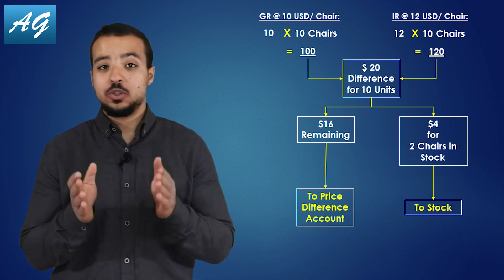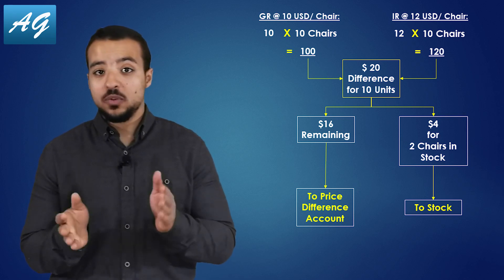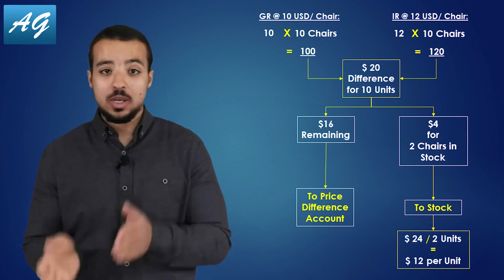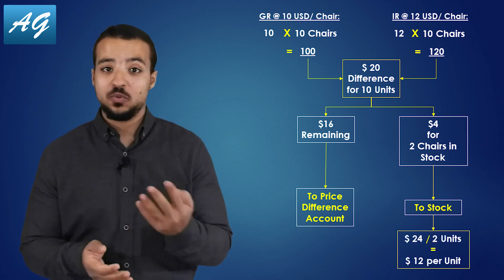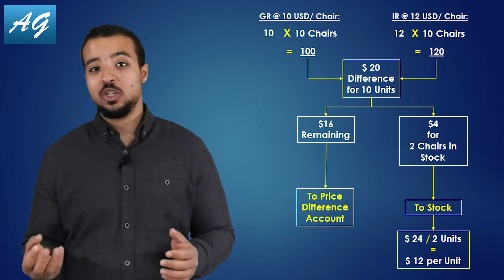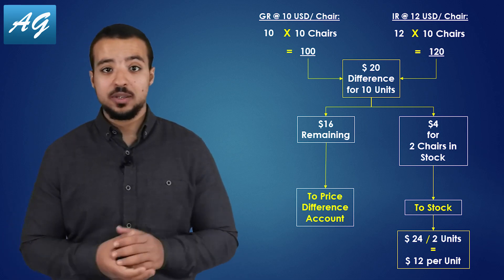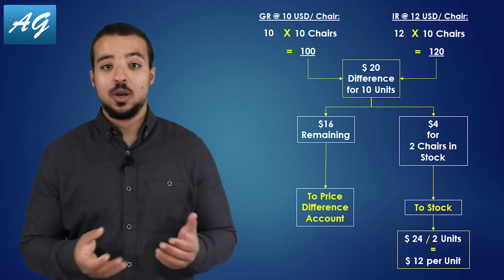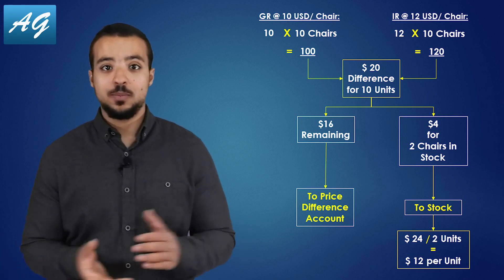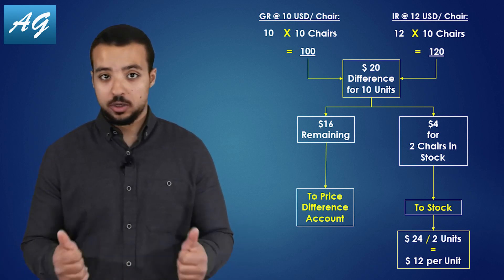So now the stock value we have is going to be 24 USD, the stock quantity we have is 2 pieces, and the moving average is 12 USD per share — which is correct.